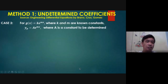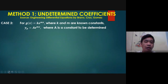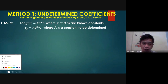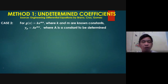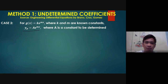Let's proceed with case 2. So for g of x equal to an exponential function ke raised to mx, where k and m are known constants, our trial solution yp is equal to ae to the mx, where a is a constant to be determined.